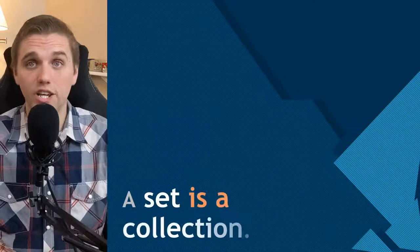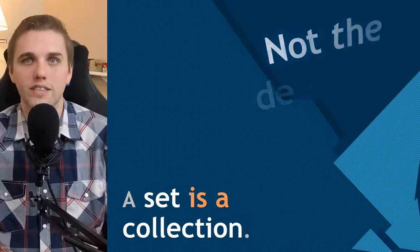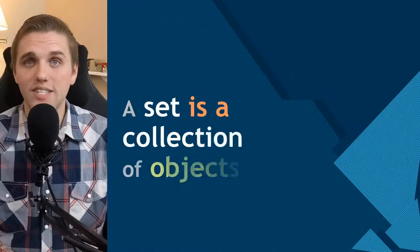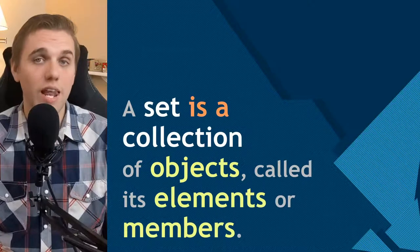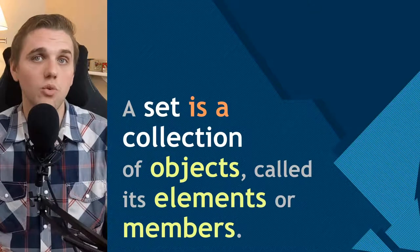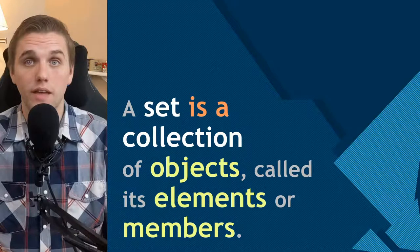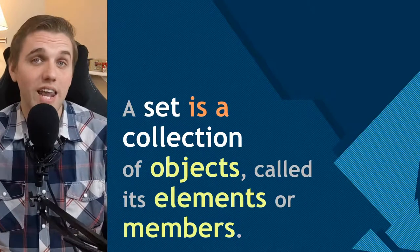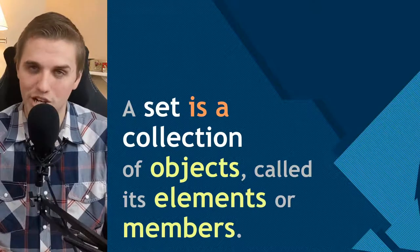Here's another example: a set is a collection. This is technically true, but this is not the definition of a set. So when I say that a set is a collection of objects called its elements or members, I want you to consider what collections of objects might look like, and then consider that a set is a collection of objects. That's a description again.